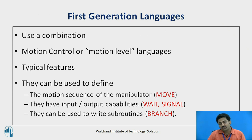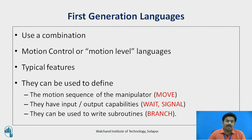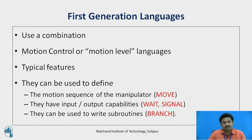First generation languages use a combination of command statements and teach pendant procedures for developing robot programs. They were developed largely to implement motion control with a textual programming language, and are therefore sometimes referred to as motion level languages. Typical features include the ability to define manipulator motions, straight line interpolation, branching, and elementary sensor commands involving binary signals.